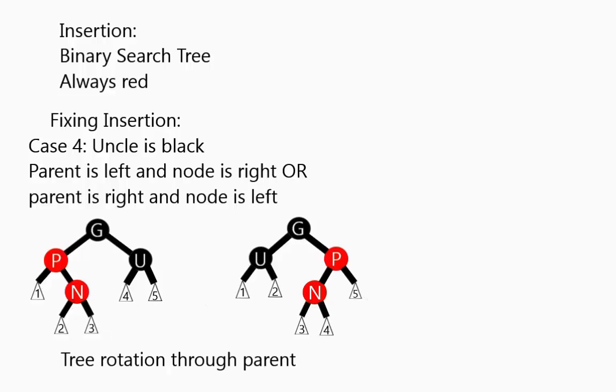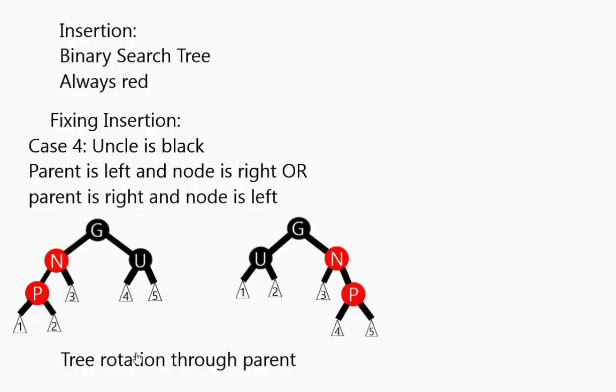So what we do here is we do something called a tree rotation. What will happen is the node will go up to the parent's spot, and the parent will become the left child of the node. Also, if you look at this number 2 here and this number 4 here, it switches parents. So the 2 will no longer be the left child of node, it will be the right child of parent, and vice versa over here. This 2 used to be a left child of node. When node went up, it became the right child of the parent.